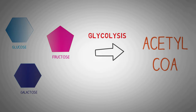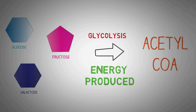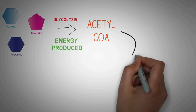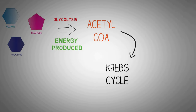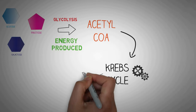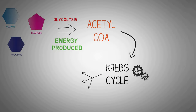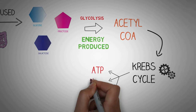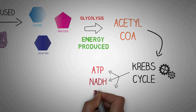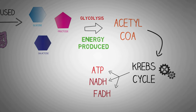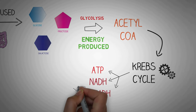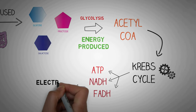This acetyl-CoA is then used in another biochemical cycle known as the Krebs cycle or the citric acid cycle, which takes place inside the mitochondria of the cells. In this cycle we extract almost all of the energy present in these sugars in the form of ATP, NADH and FADH. ATP is utilized directly for energy whereas NADH and FADH are high energy molecules used in the next step — the electron transport chain — where the high energy electrons in NADH and FADH are used to produce a lot more ATPs.